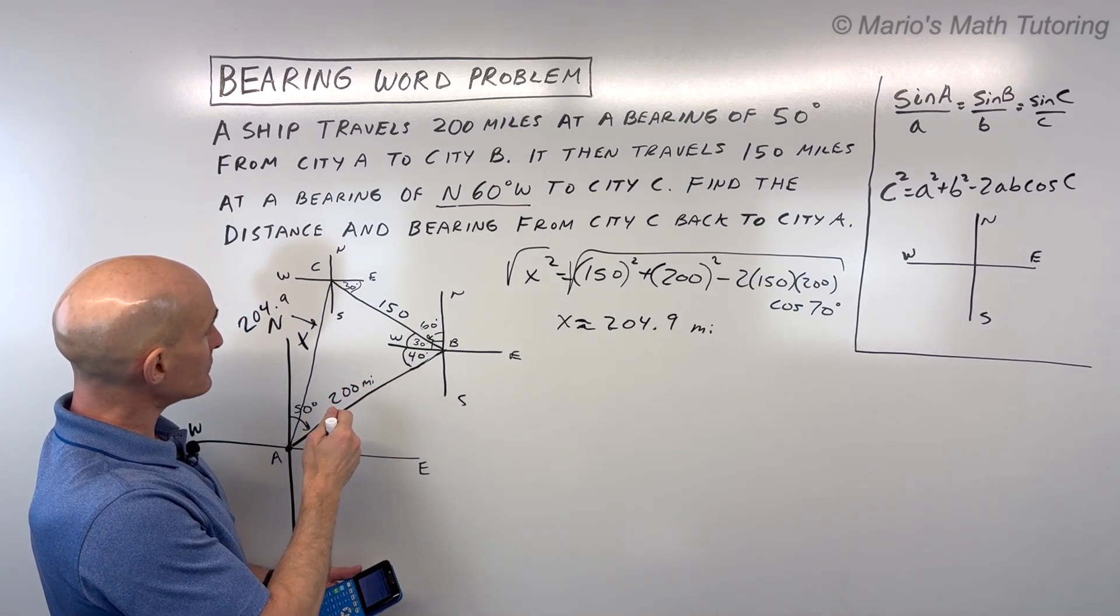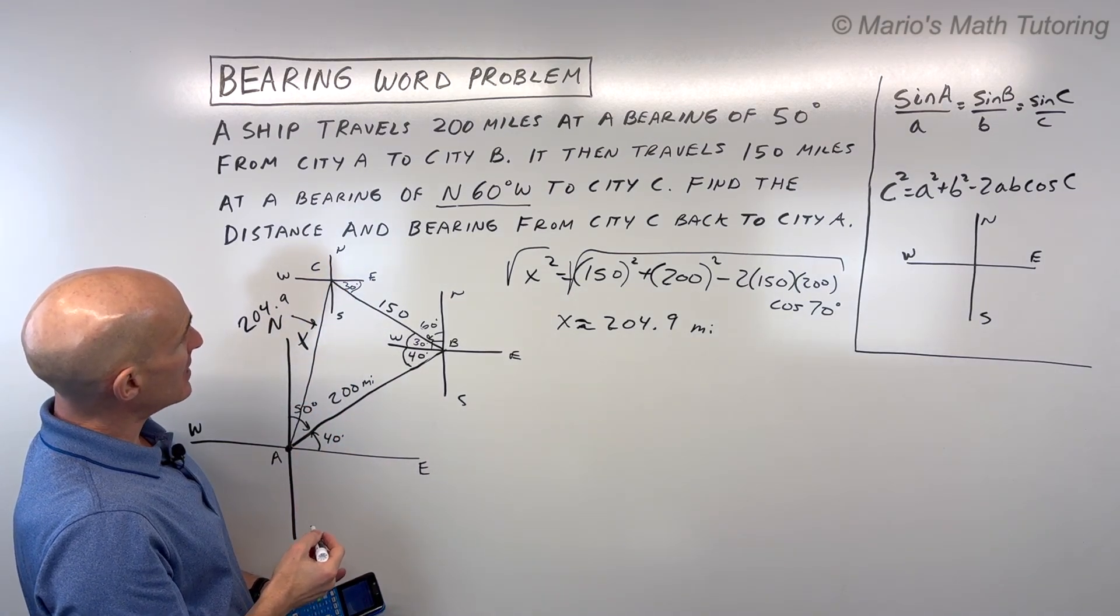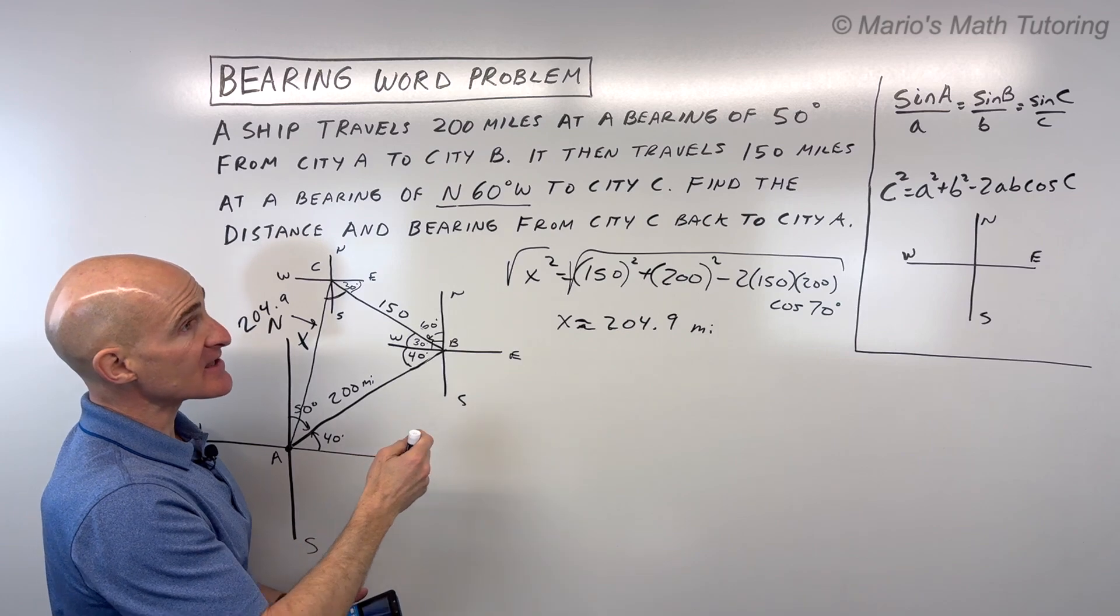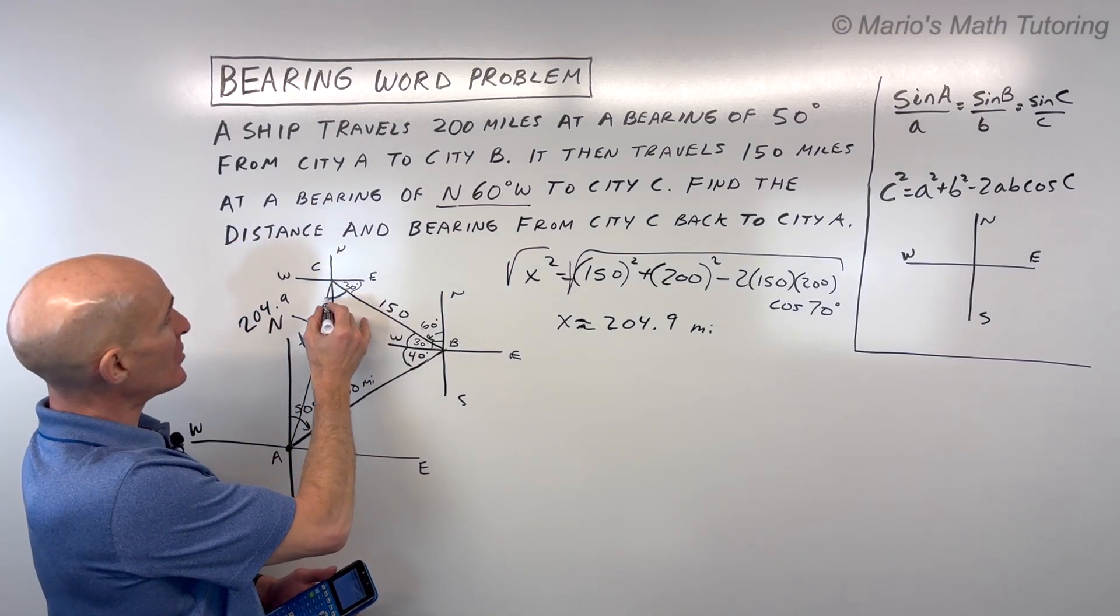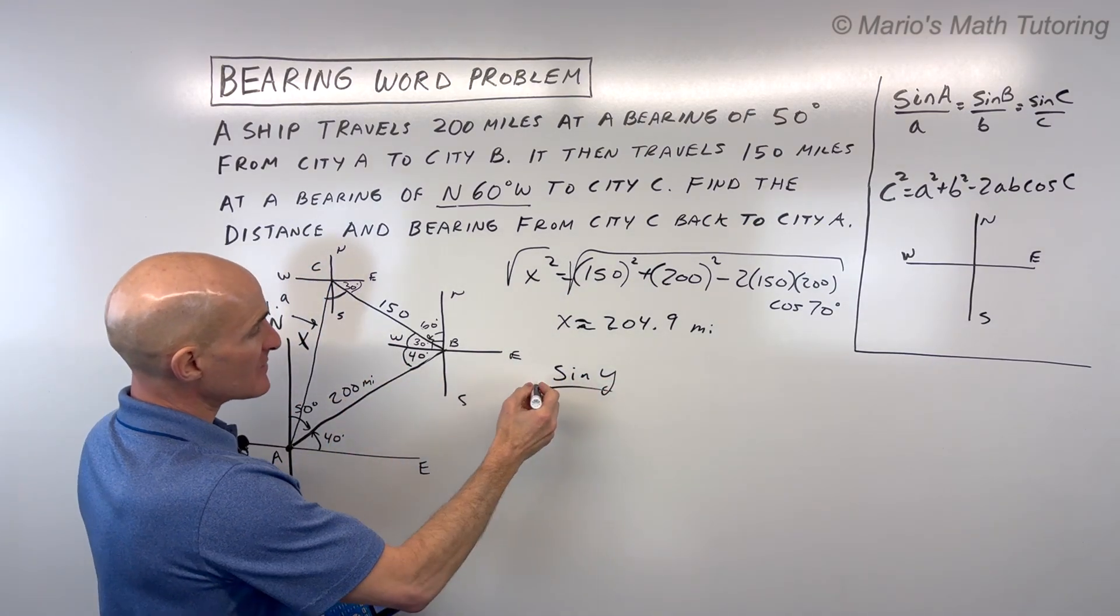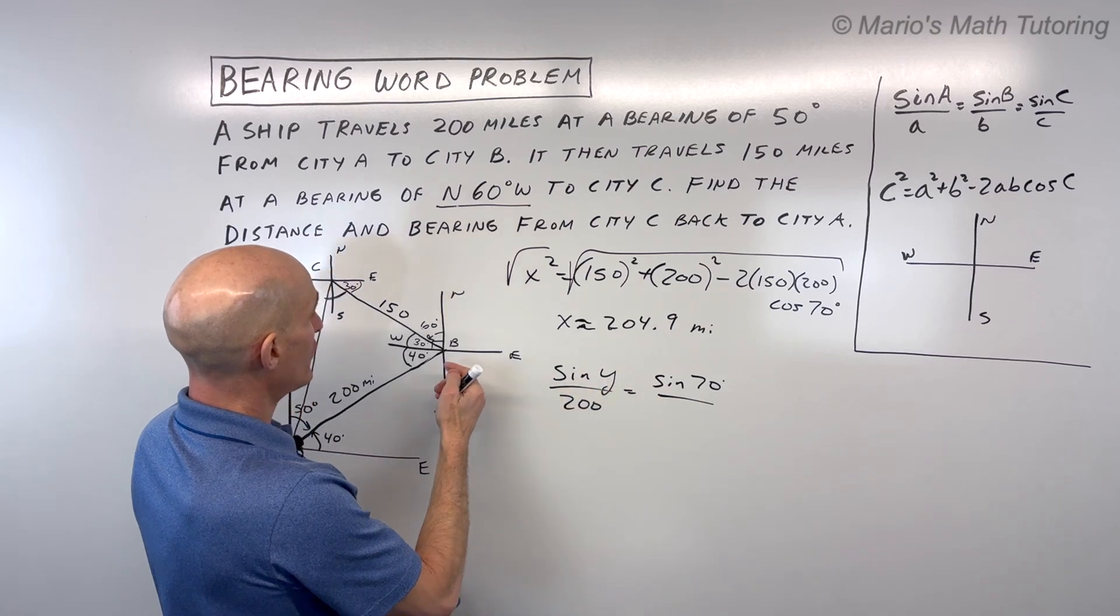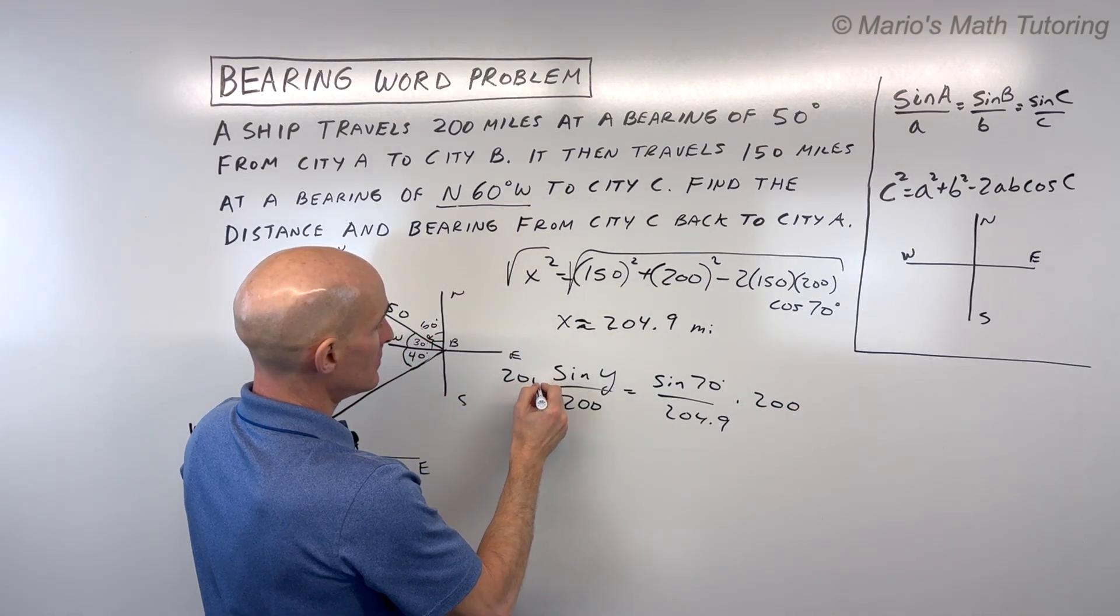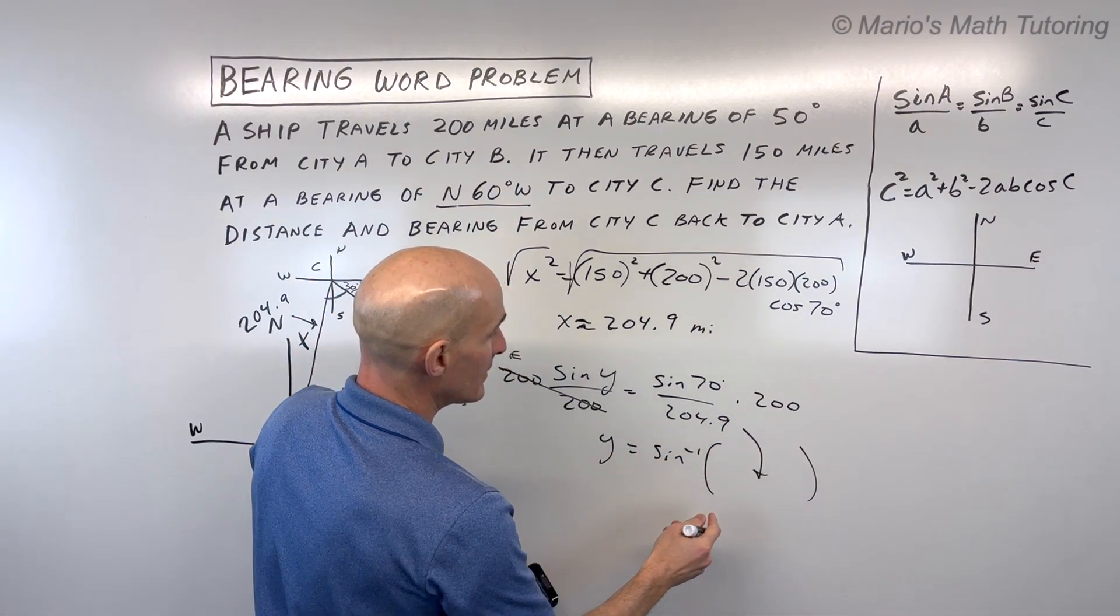Now we want to find the angle, or the direction from city C to city A. So what we could do here is a couple different things. We could look at this angle right here. And we're going to use the law of sines now. The sine of an angle over its side opposite equals the sine of another angle over its side opposite in a given triangle. So let's just say we call this whole angle here Y. So I'm going to say the sine of angle Y over the side opposite, which is 200, equals the sine of 70 degrees over its side opposite, which is the 204.9 miles. I'll multiply both sides by 200, and then to find Y, I'm going to have to take the sine inverse of this whole quantity. So let's go ahead and do that.